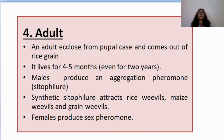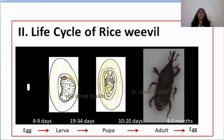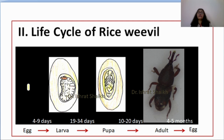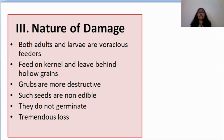This diagram represents the life cycle of rice weevil. You can see a small egg, then the larva within the rice grain, and the pupa within the rice grain. After 10 to 20 days, the pupa is converted into an adult rice weevil. The adult lives for 4 to 5 months, lays eggs which hatch in 4 to 9 days to produce larvae, and the life cycle continues. The third point about rice weevil is the nature of damage.